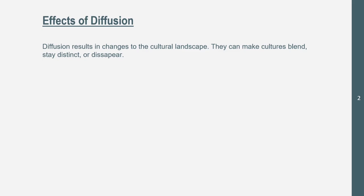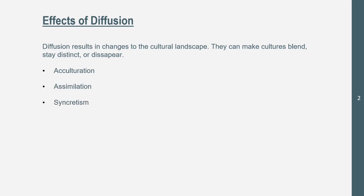A distinct culture means you can tell the differences pretty easily between cultures in an area. Cultures can blend together based on physical features and human factors like communication with those cultures or how widely known they are. The four effects of diffusion we're going to talk about are acculturation, assimilation, syncretism, and multiculturalism.